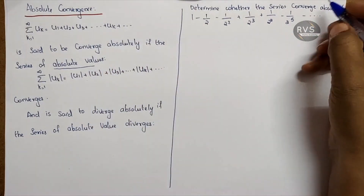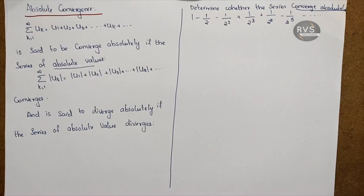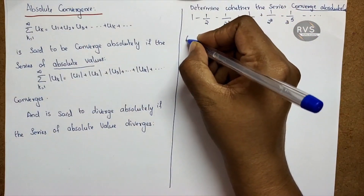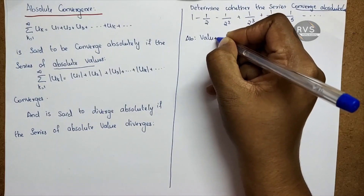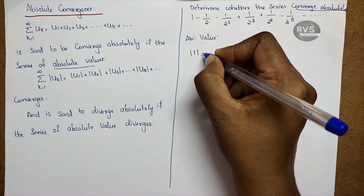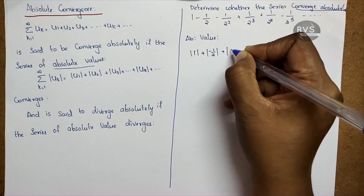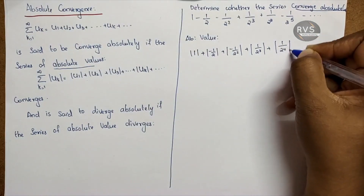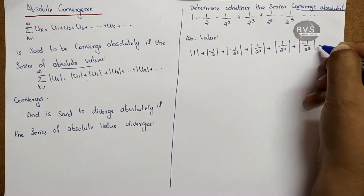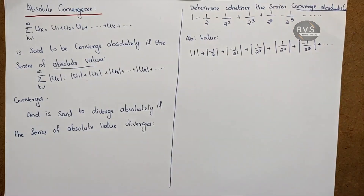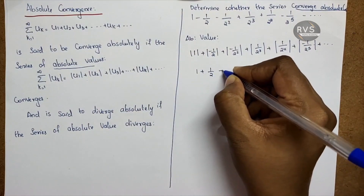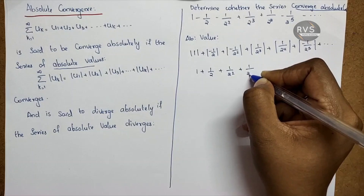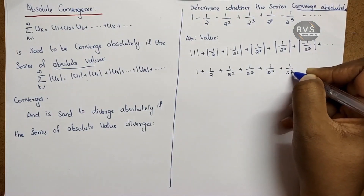To check absolute convergence, we take the series of absolute values. The absolute value series is: 1 plus one-half plus one over two-squared plus one over two-cubed plus one over two-to-the-fourth plus one over two-to-the-fifth, and so on. Since the absolute value of a negative term is positive, we now have all positive terms.